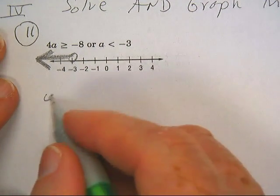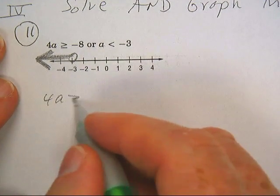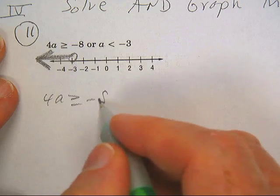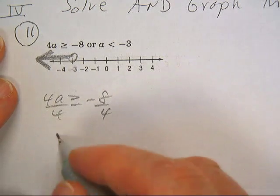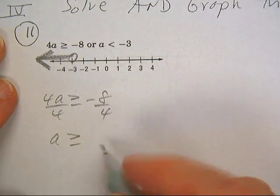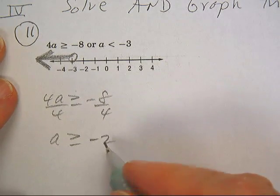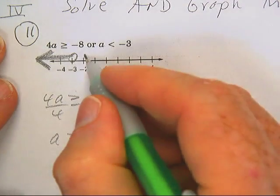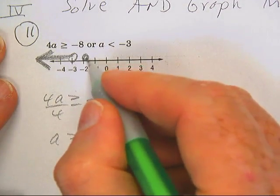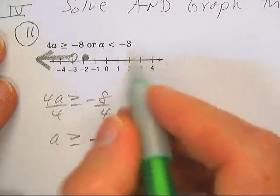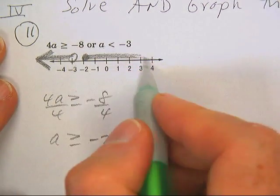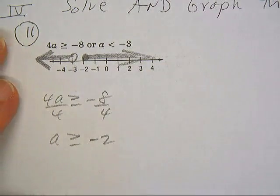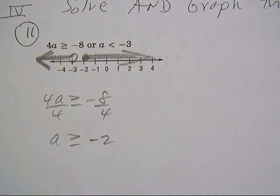And then let's take 4a is greater than or equal to negative 8. Let's divide by 4. a is greater than or equal to negative 2. There's that one.